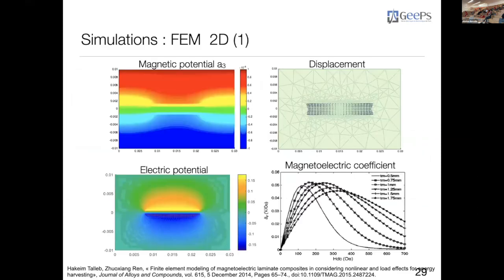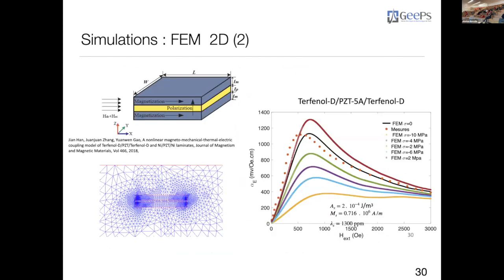Here are simulation examples. We have a laminate rectangular structure showing magnetic potential, displacement, and electric potential, as well as the magneto-electric coefficient for different thicknesses of the magnetostrictive layer. We also compare measurement and simulation for a specific Terfenol-D/PZT/Terfenol-D case, finding good agreement, and we can predict the behavior of the composite for different applied stress levels.